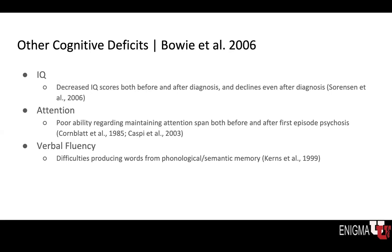I wanted to shift attention to another paper — a little older, but providing a nice overview of other cognitive deficits seen in schizophrenia. With regards to IQ, we see decreased IQ scores both before and after diagnosis, with declines continuing even after diagnosis. We also see poor ability in maintaining an attention span both before and after first episode psychosis. Previous studies also mention difficulties producing words from phonological and semantic memory in individuals with schizophrenia. So broadly, it's not just working memory or prefrontal cortex deficits — we see deficits in IQ, attention, and verbal fluency as well.